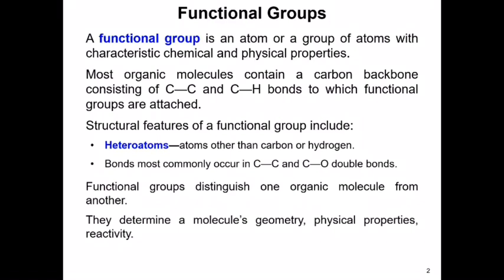Examples of heteroatoms include sulfur bonded to a carbon atom, nitrogen, oxygen, and the halogens — these are all defined as heteroatoms, atoms other than carbon or hydrogen. Structural features also include bonds, which most commonly occur as carbon-to-carbon and carbon-to-oxygen double bonds.